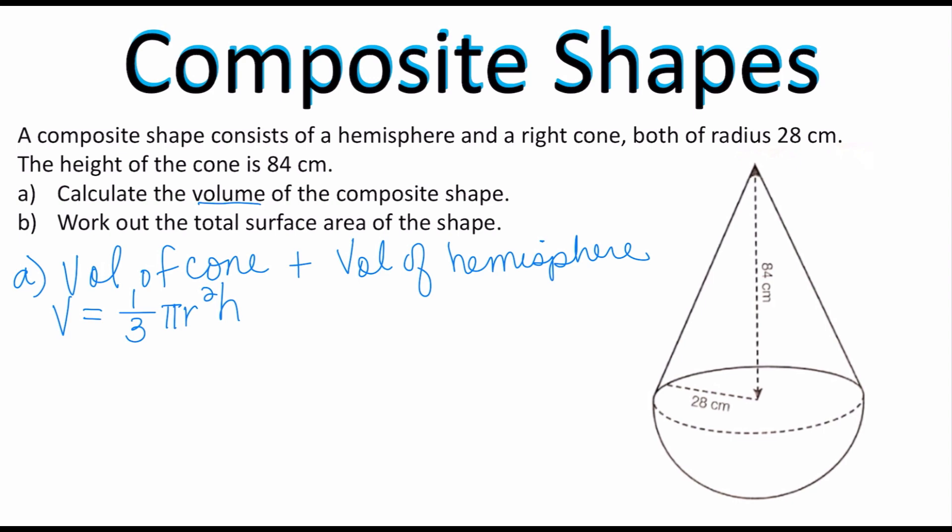And then the volume of a sphere is going to be (4/3)πr³, but we don't want the entire sphere, we only want half of the sphere. So we're going to multiply this by 1/2 because we only want half of it.